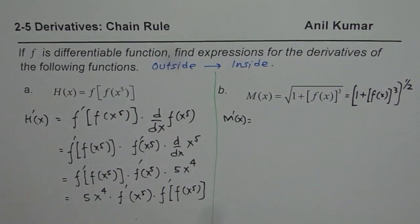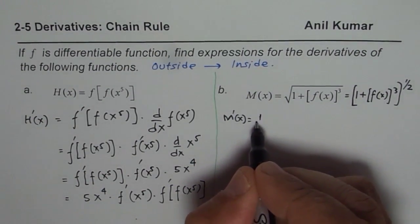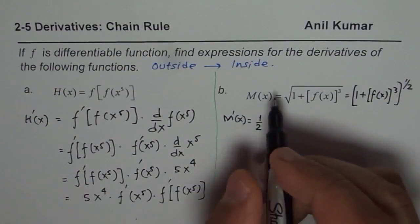You may or may not write this, but it helps. It gives you the outside function derivative: 1/2 of all this to the power of -1/2.